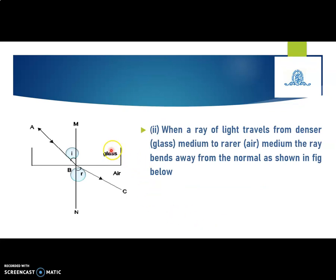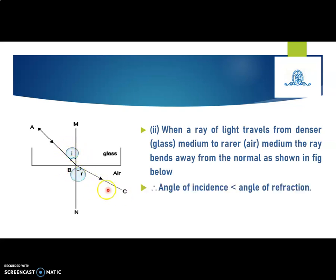On the other hand, when a ray of light travels from a denser medium to a rarer medium — that is, from glass to air — refraction still occurs, but the ray bends away from the normal such that the angle of incidence is always less than the angle of refraction. Therefore, the refractive index of the rarer medium with respect to the denser medium is always less than 1, as given by Snell's law.